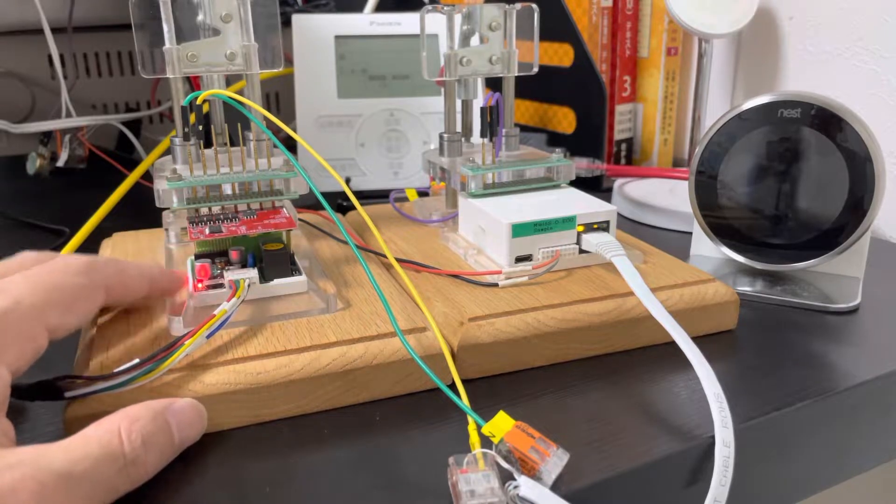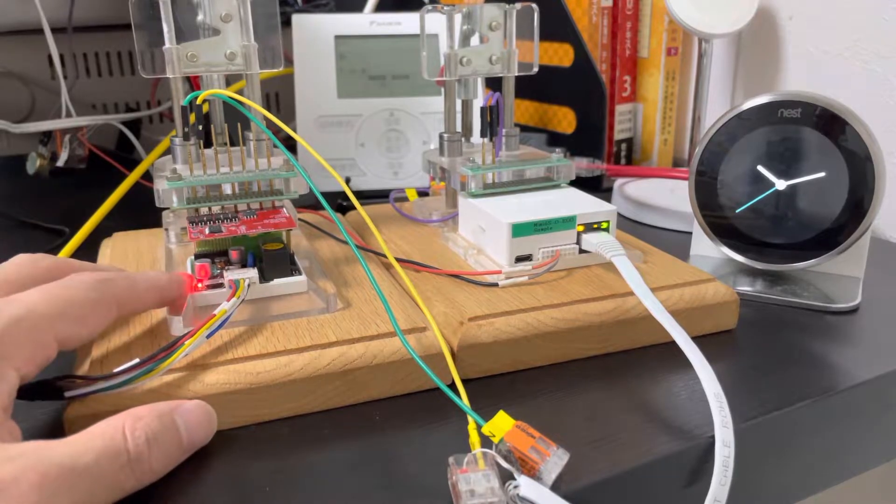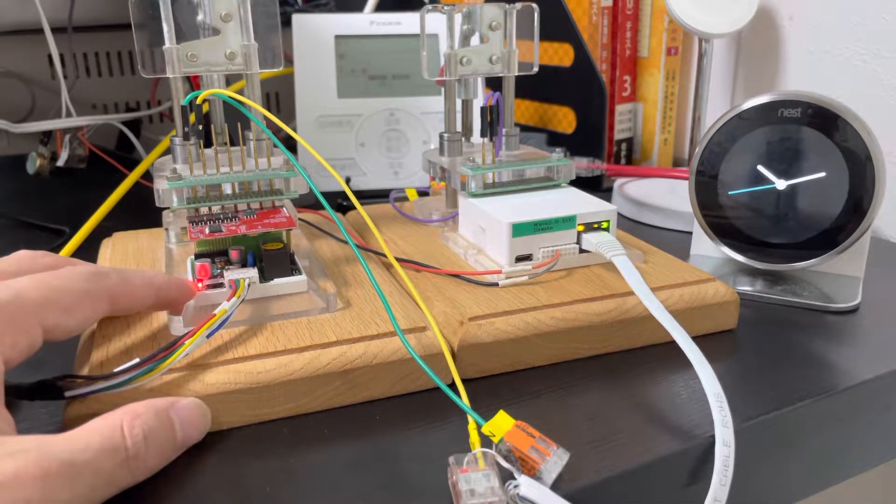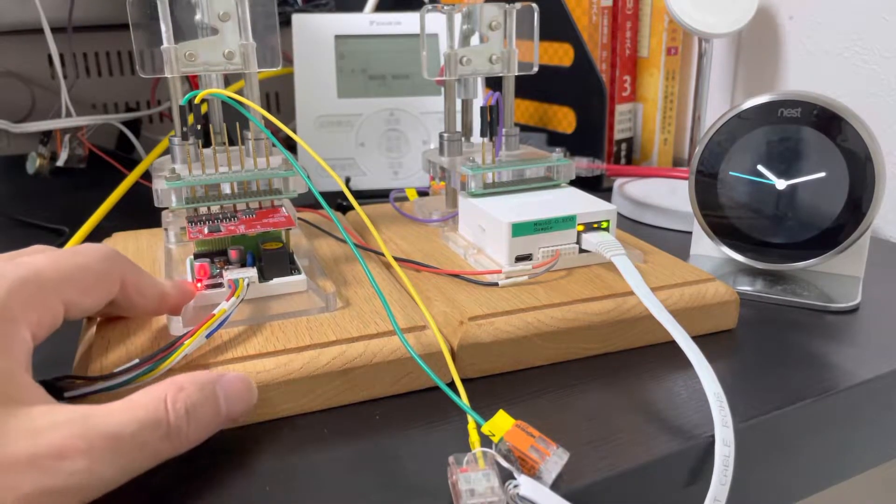Because the slave is installed behind the nest, sometimes it will affect the nest to detect the room temperature. It will be a little higher than normal.